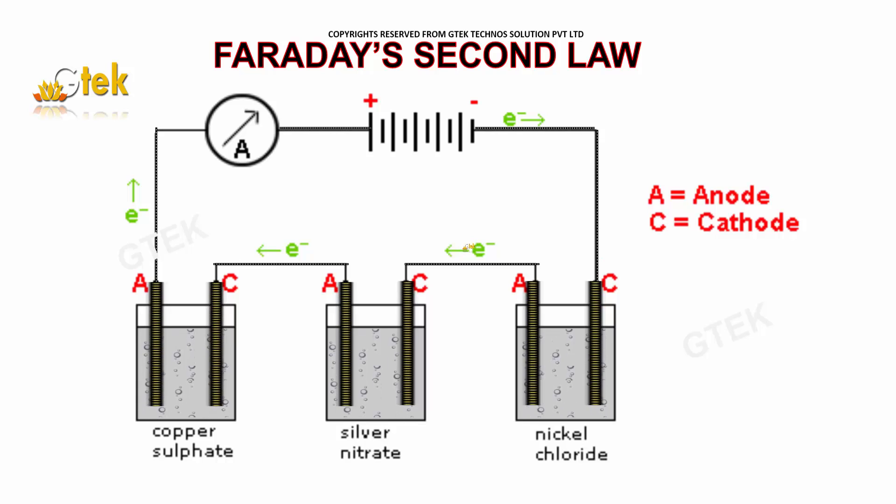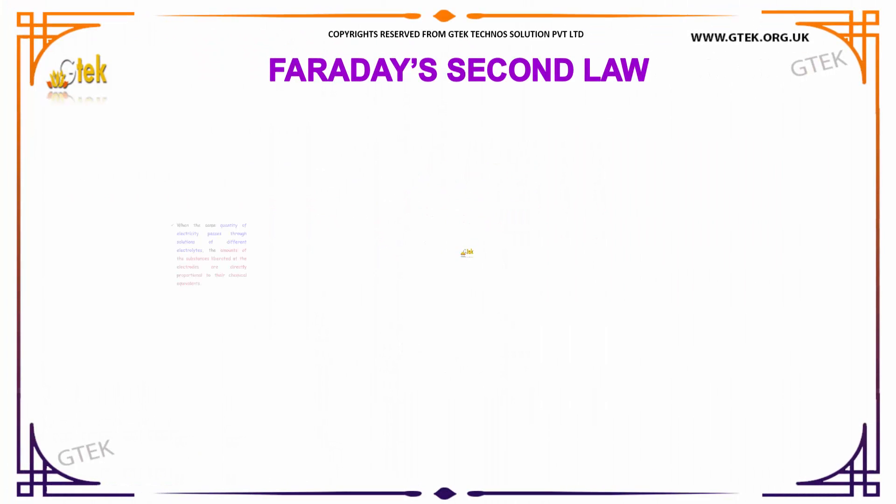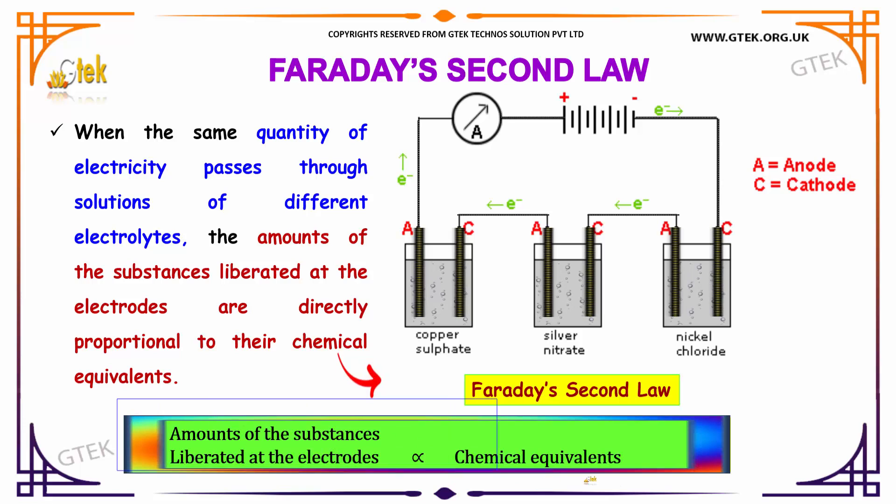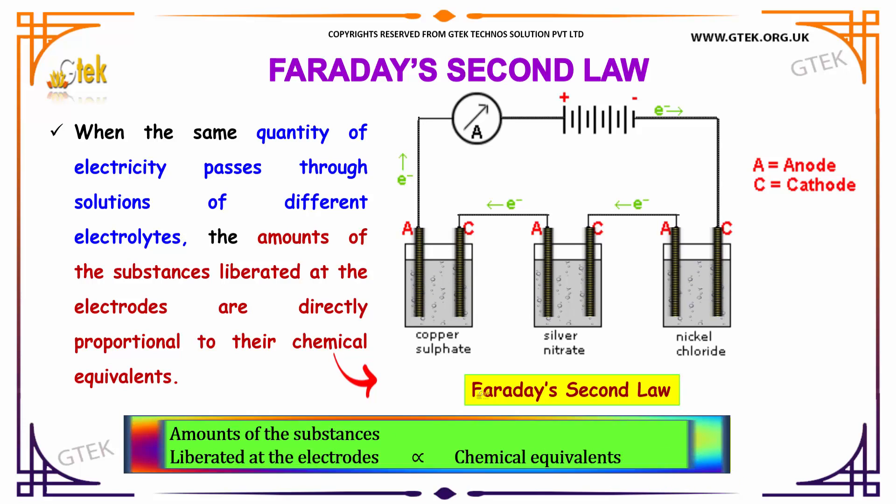Now let's move to Faraday's second law. According to Faraday's second law, when the same quantity of electricity passes through solutions of different electrolytes, the amounts of the substances liberated at the electrode are directly proportional to their chemical equivalence. So this is all about Faraday's second law.